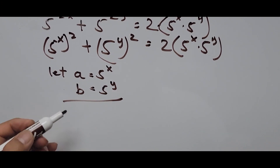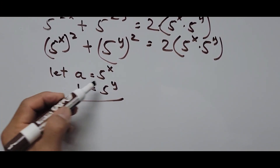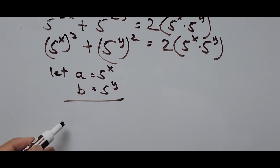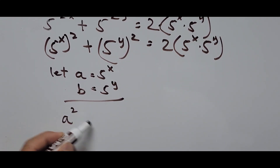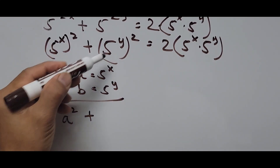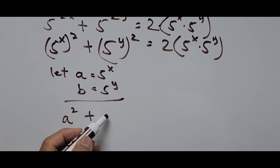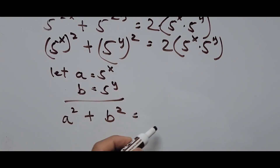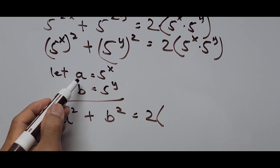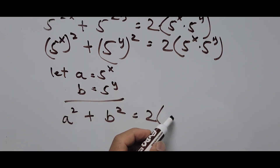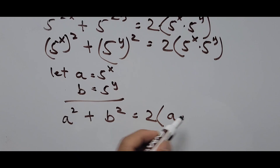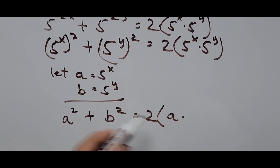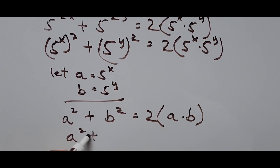By substitution, a represents 5 raised to x, so we have a squared plus b squared — since 5^y is now b — equals 2 times a times b. Simplified, that gives us a squared plus b squared equals 2ab.